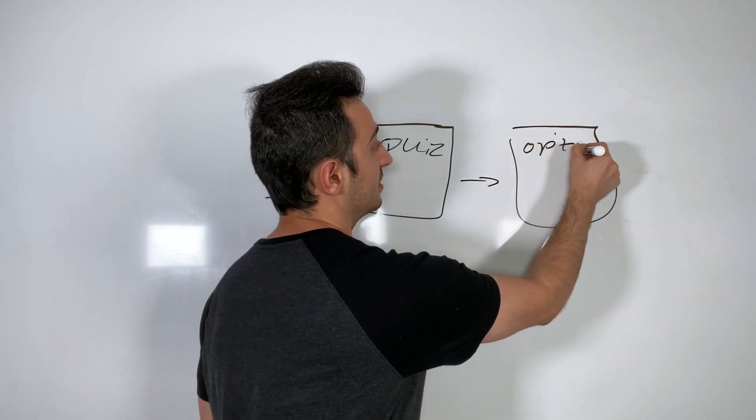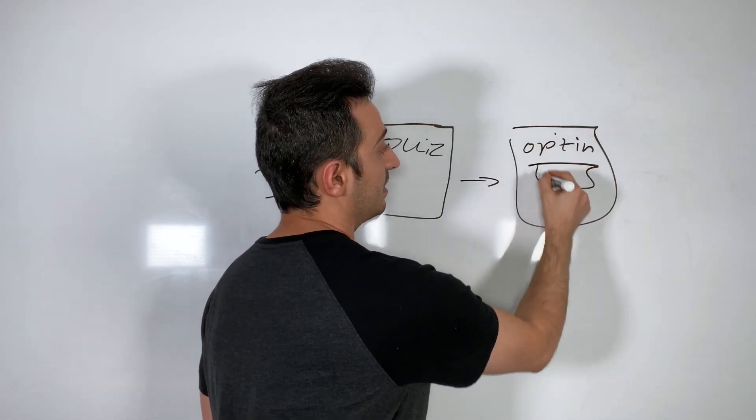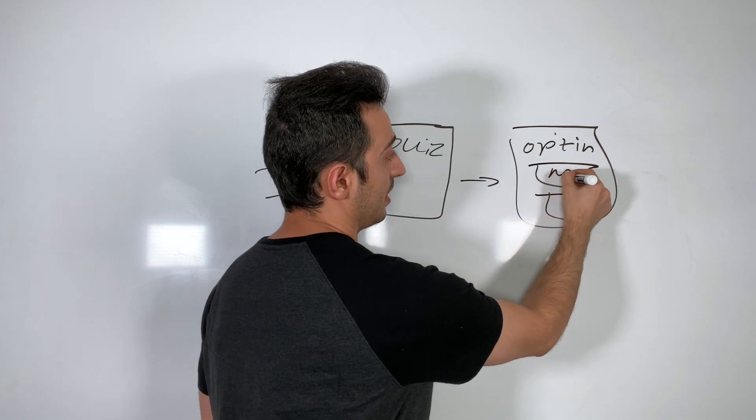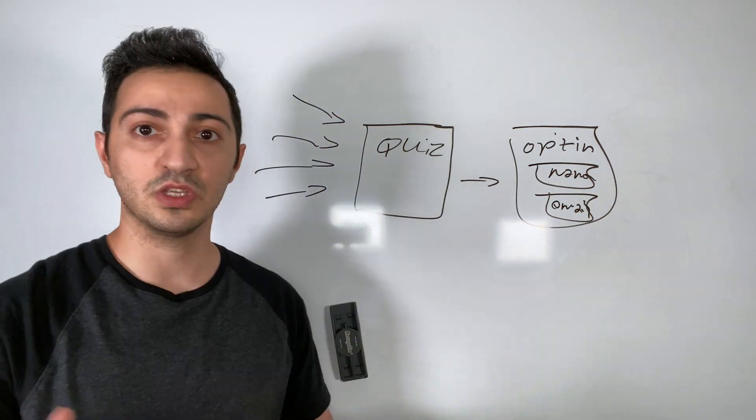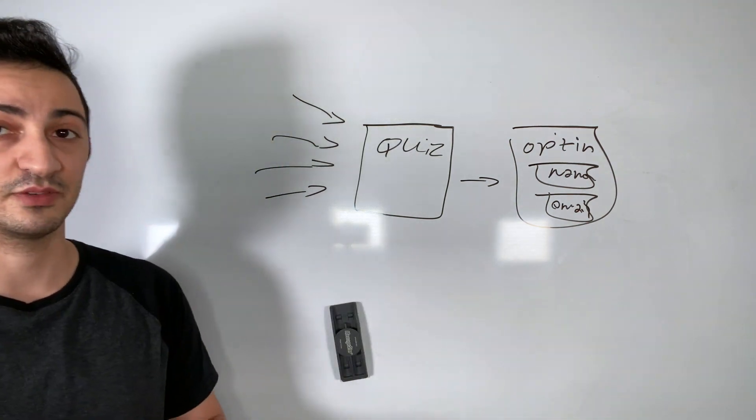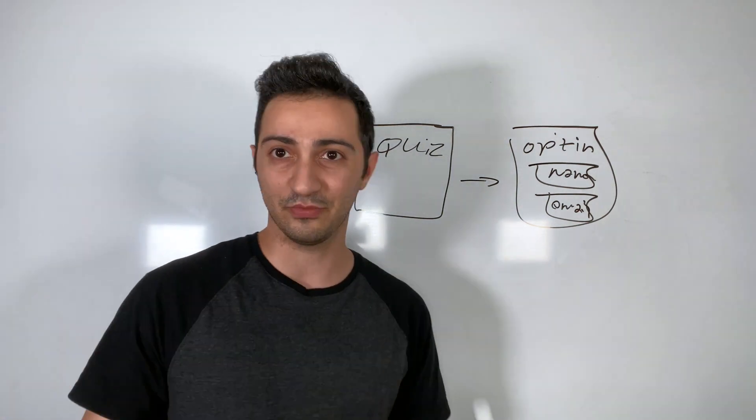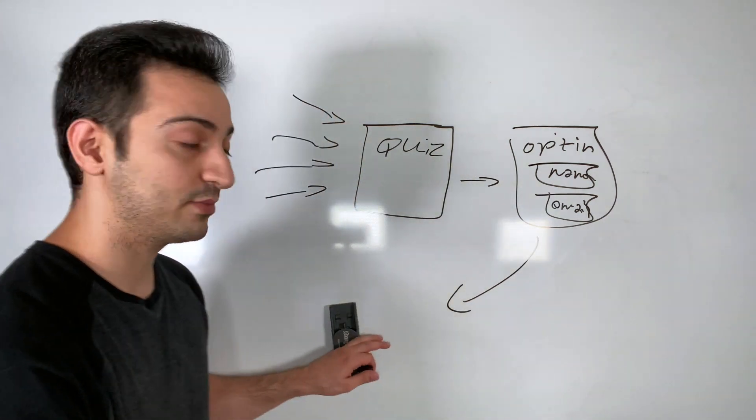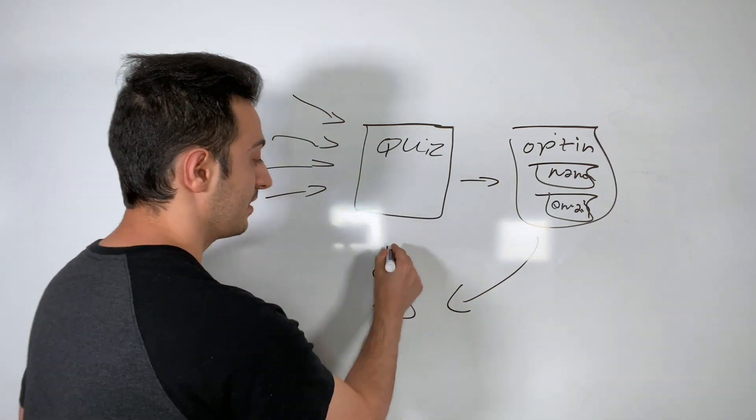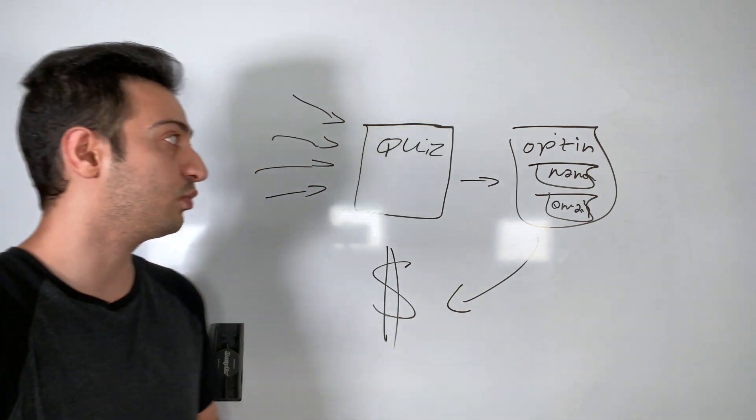Now opt-in page is where you get their name and information. Name, email. So this is where you get their information. And then after this, if you're trying to get that ClickBank sale, what you want to do is you want to send them to your affiliate link. So this is how you do it, guys. It's really simple.